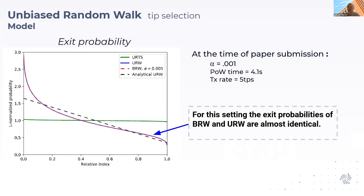What we can do is sort these exit probabilities by least likely to most likely probability, and we derive an exit probability distribution. In the IOTA 1.0 protocol, the values are such that at the moment the biased random walk is very similar to the unbiased random walk, so we can model these similarly.